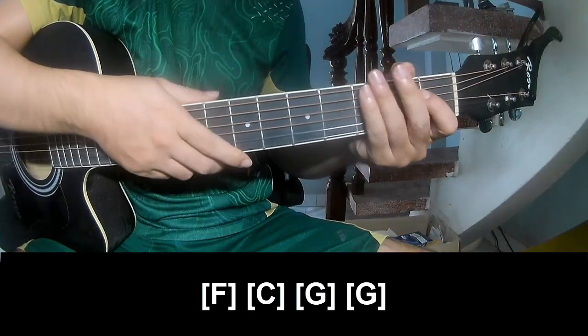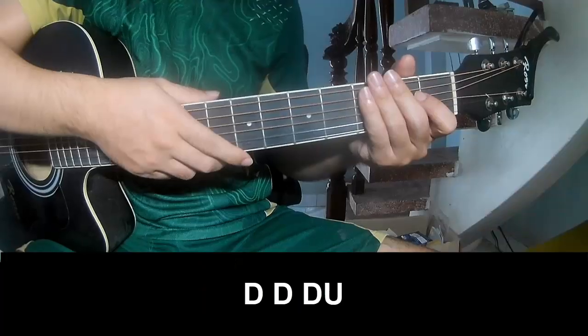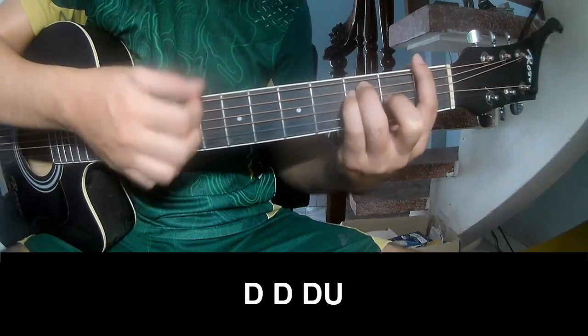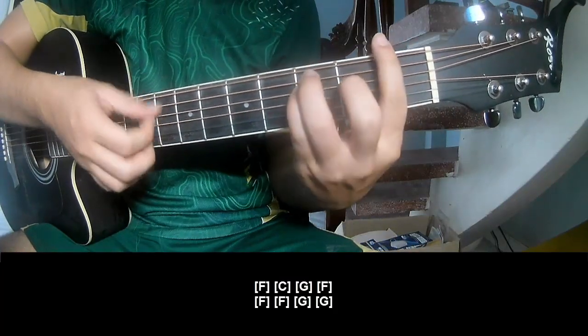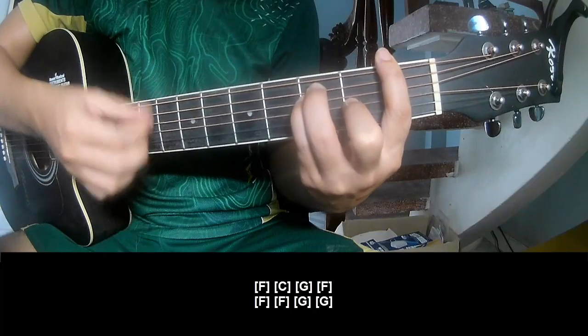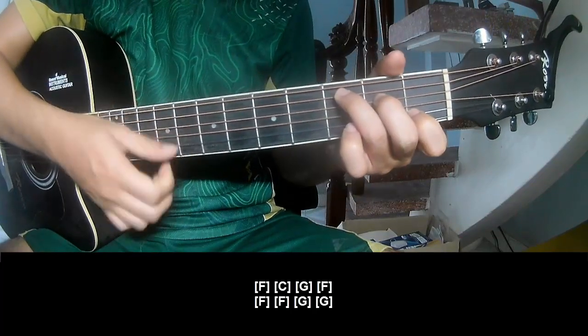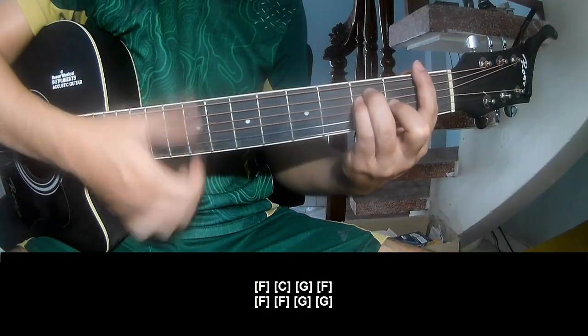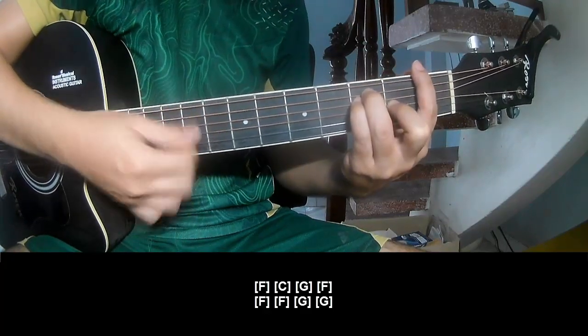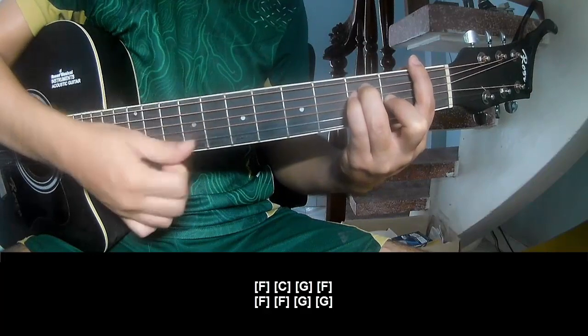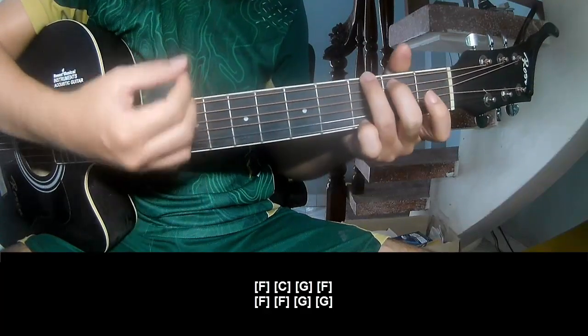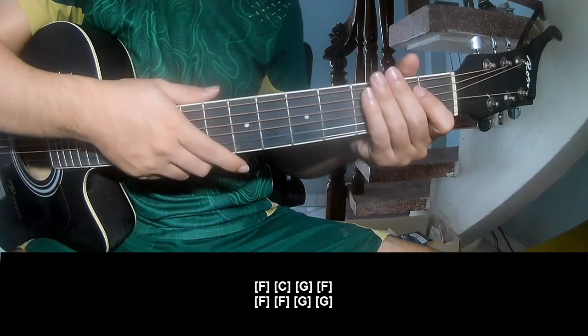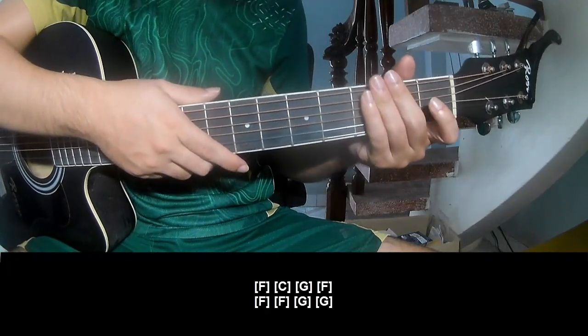G is the same way for this track. To play down down down down as you play along F, C G F and F F G and G. And C, the system is the same way for this track. Thank you for watching and see you again, bye bye.